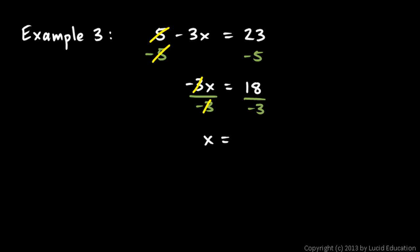Now x is all by itself on the left. And on the right side of the equal sign, I have 18 divided by negative 3, which is negative 6. And that's the answer.